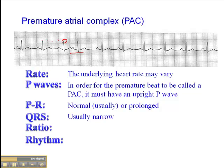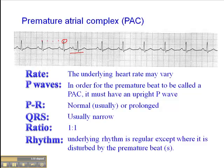The PR interval is generally normal or maybe prolonged. The QRS is usually narrow. The ratio is 1 to 1, and the underlying rhythm is regular except where it's disrupted by a premature beat. When assessing a patient and documenting what we see on the ECG, we want to know the underlying rhythm, the heart rate, what the ectopic beat is, and how often they occur — occasional PACs, frequent PACs, or a specific number like 10 to 12 PACs per minute.